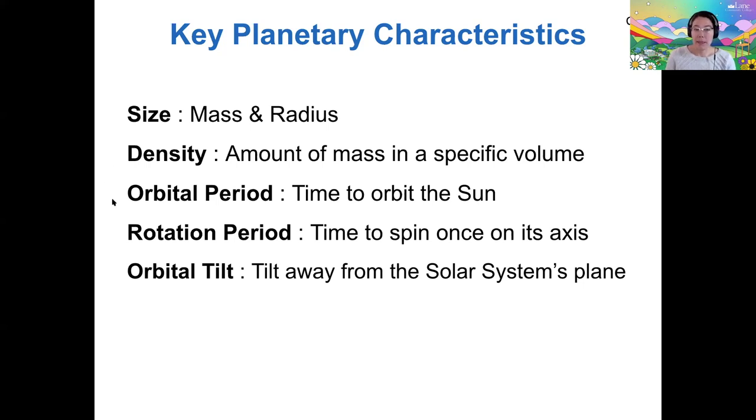We want to know its orbital period, the time it takes to orbit the sun, its rotation period, which is the time it takes to spin once on its axis, and then its orbital tilt, which is the tilt away from the solar system's plane.